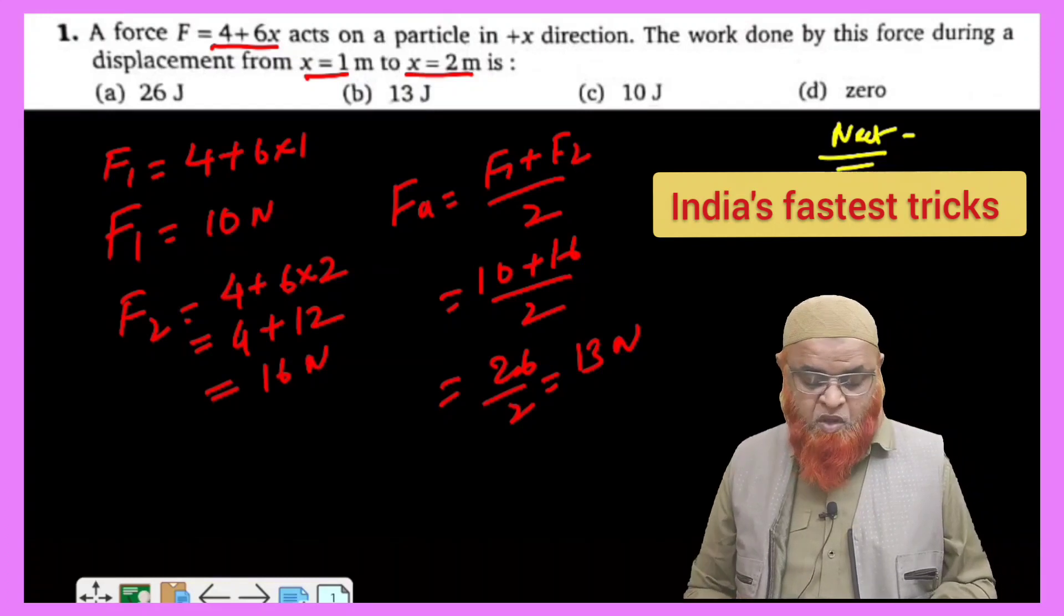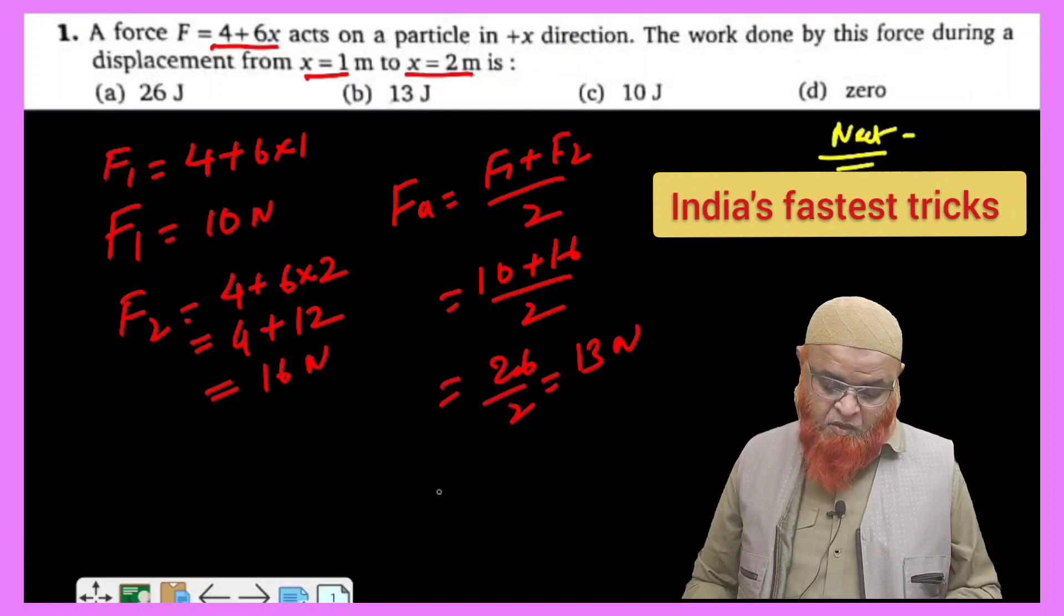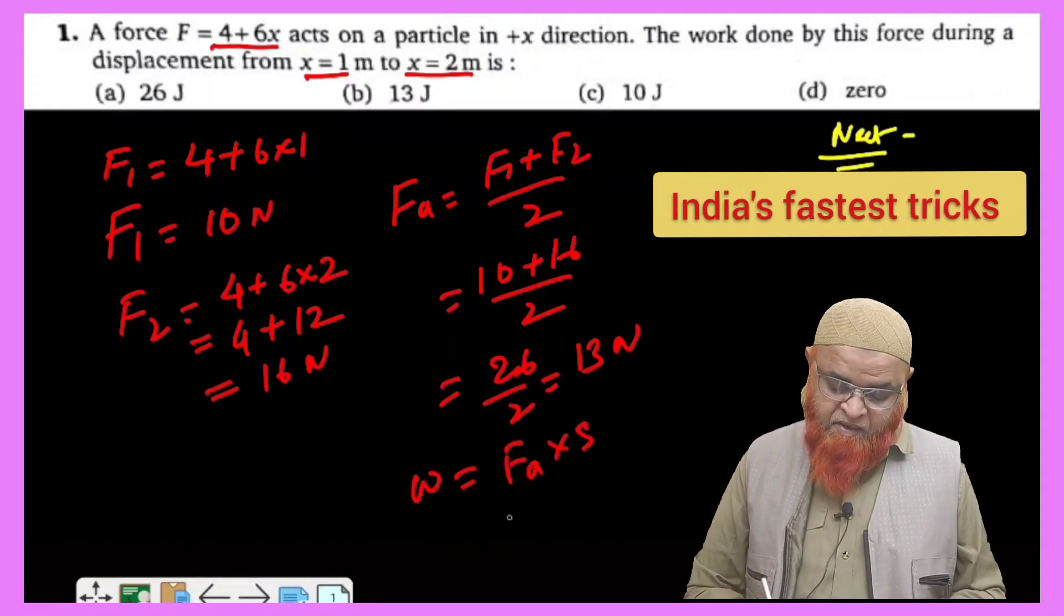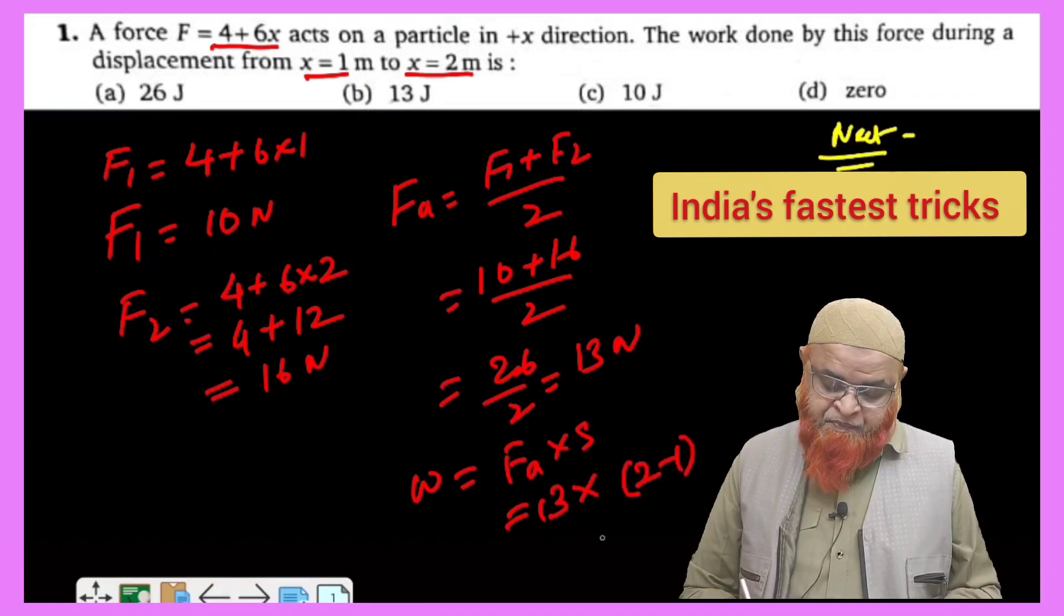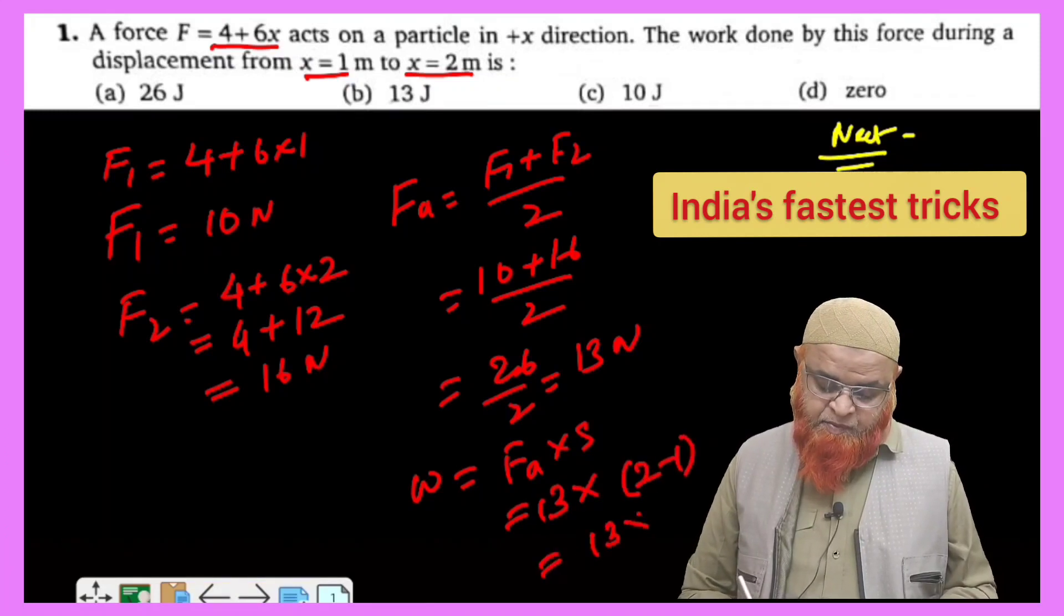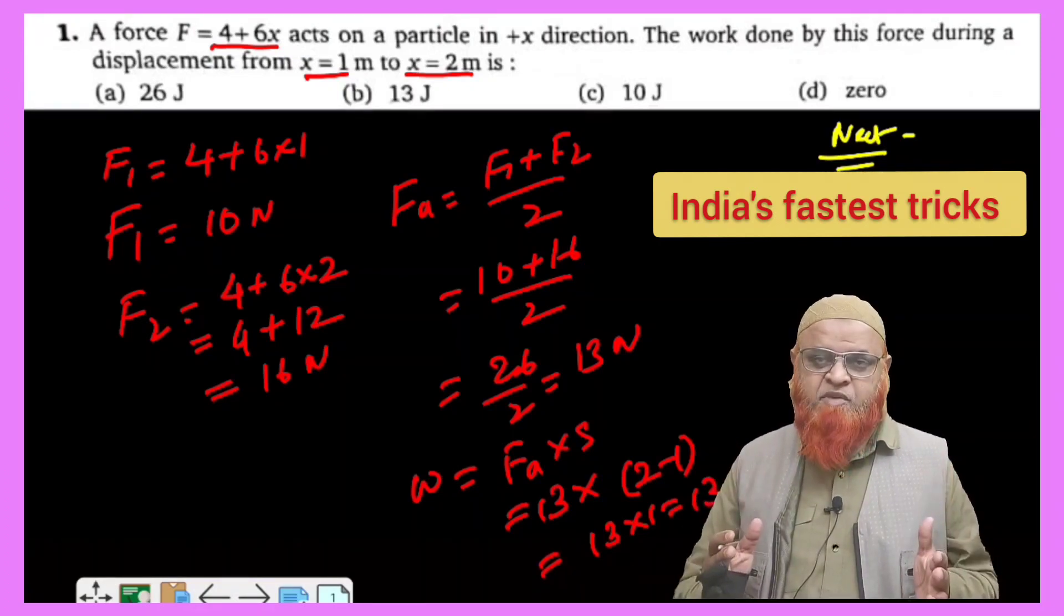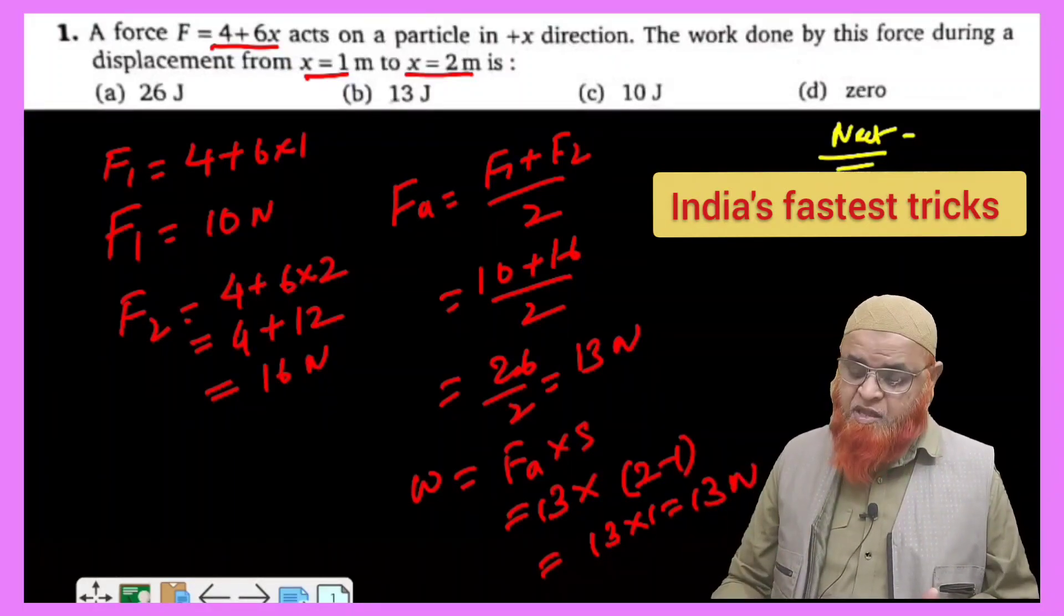It has been displaced from x equal to 1 to x equal to 2. Therefore we can write: work done is equal to average force into displacement, that is 13 into displacement. 2 minus 1 is going to be the displacement, so therefore 13 into 1, which is equal to 13 joules. This is a shortcut method of solving the problem without using integration and differentiation. Hope you have understood, thank you very much.